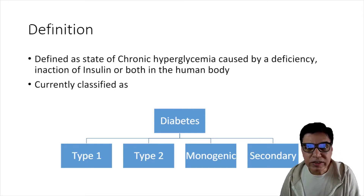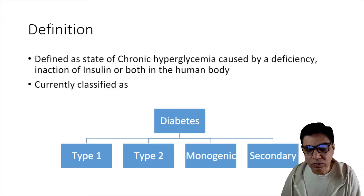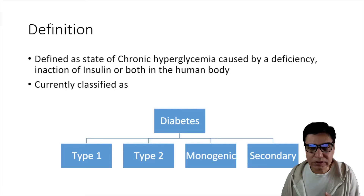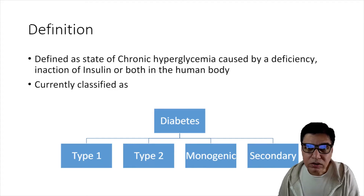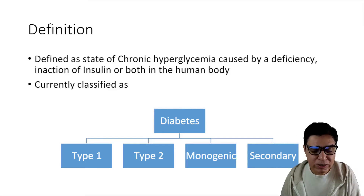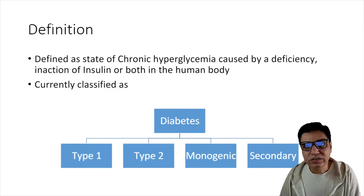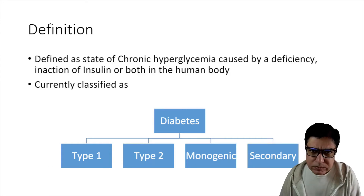Either the insulin is low in quantity or it's simply not there. Or if the insulin is there, it's not able to exert its effects because of faulty receptors, down-regulation of receptors, or for many other reasons. Sometimes it could be a combination of both — insulin low in quantity and receptors not working.